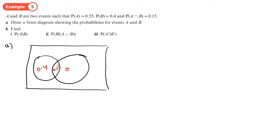And then there's going to be something left for the outside. So 0.4 plus 0.15 plus 0.25, that makes 0.8. So 0.2 is left for here. So this is A, this is B.